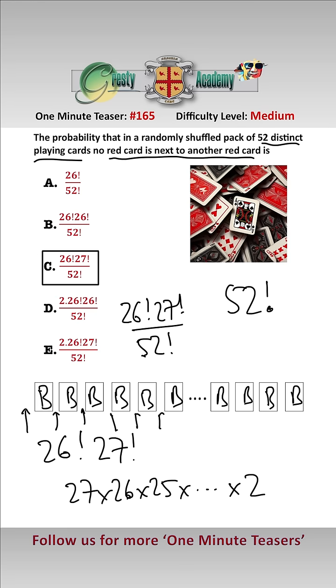Note this is slightly different from teaser 164, because in that teaser it was no card is next to another card of the same color. In this teaser, it is possible that black cards can be next to each other if two red cards are here and here.